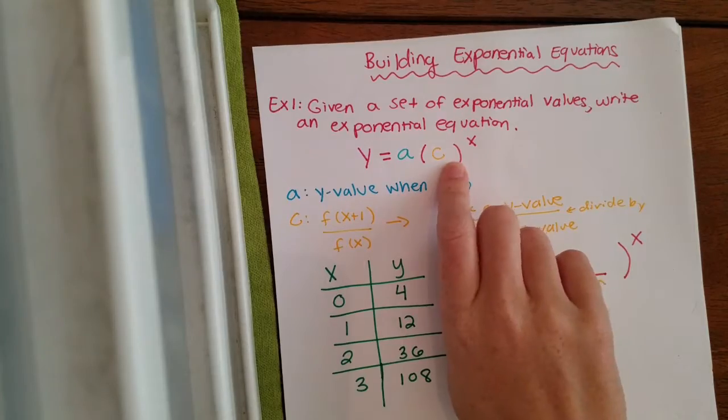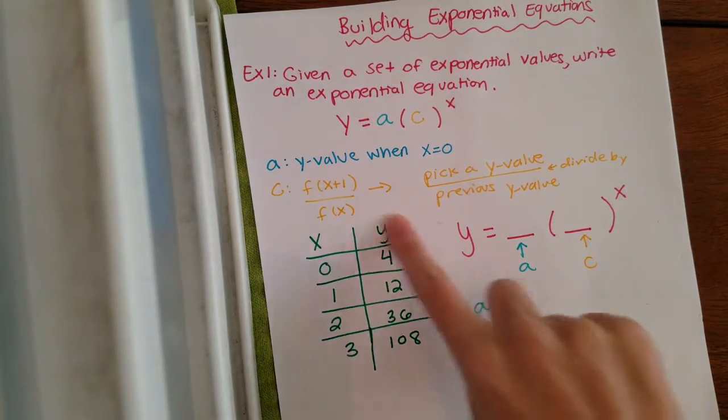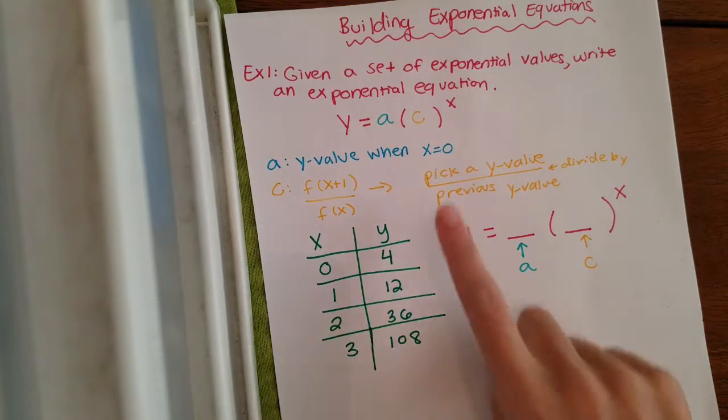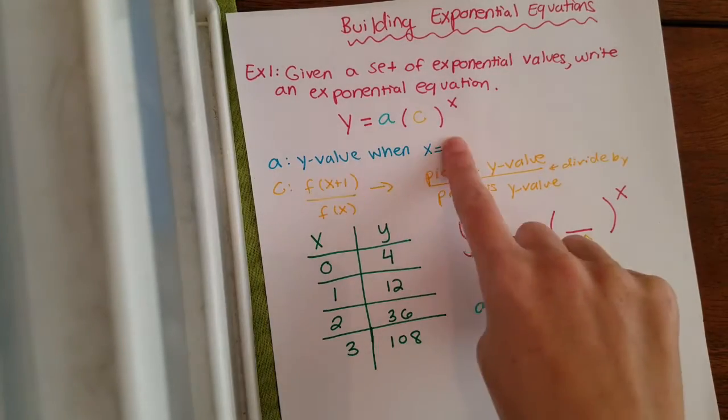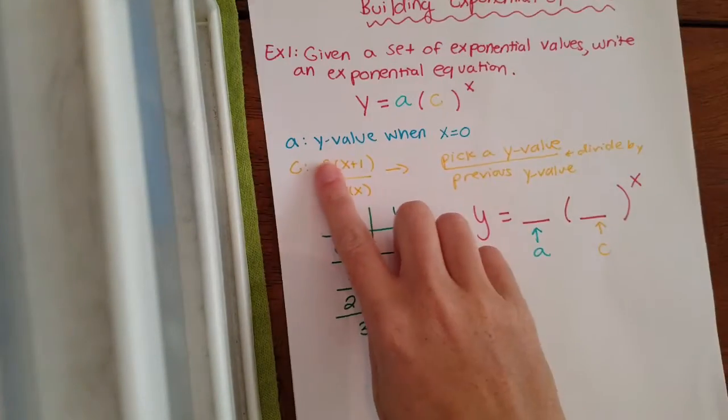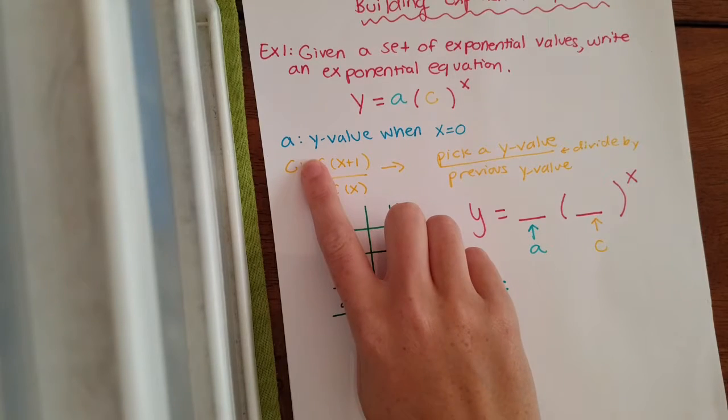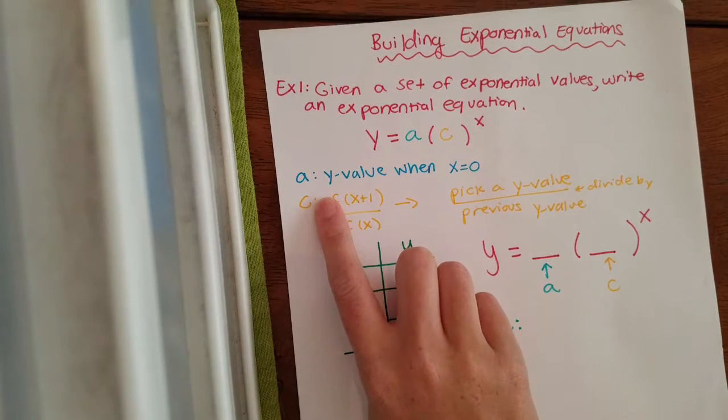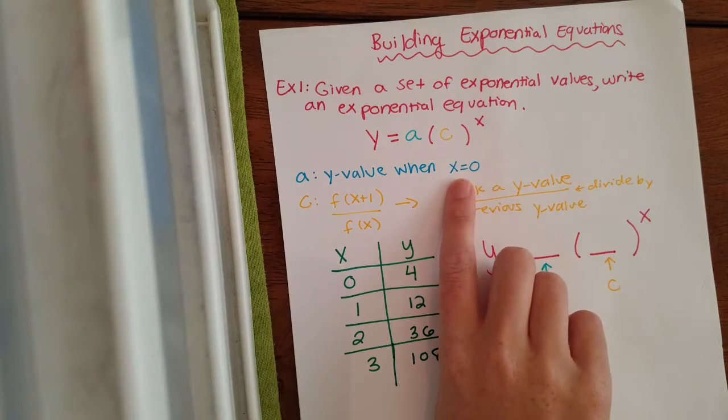So remember, these are the x and y values that we're going to be given, and we're going to be building an equation that looks like this. So from the Prezi video, you should remember that the a value is your start amount, which is always when x equals zero.